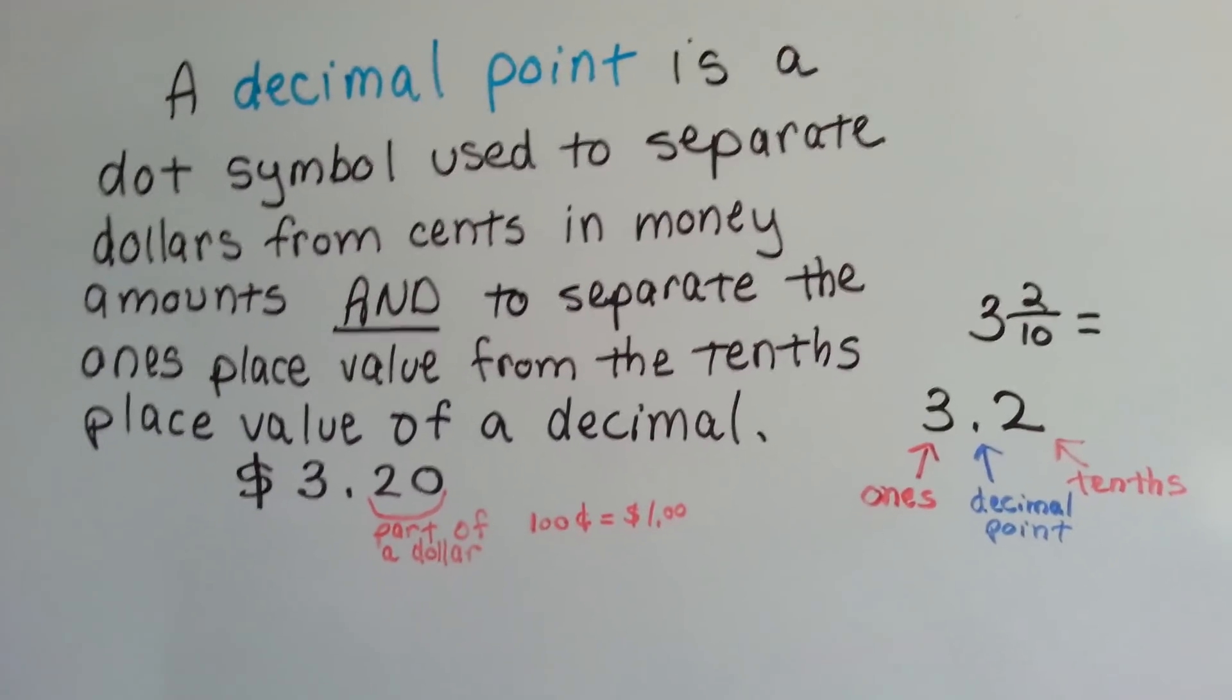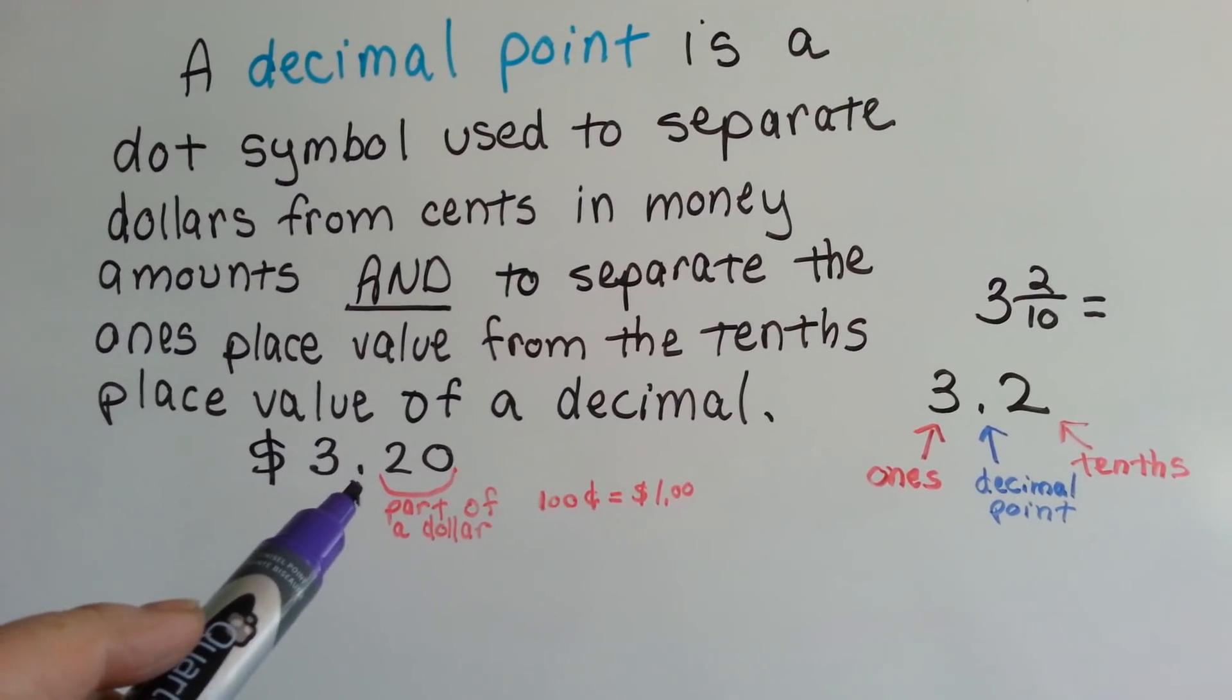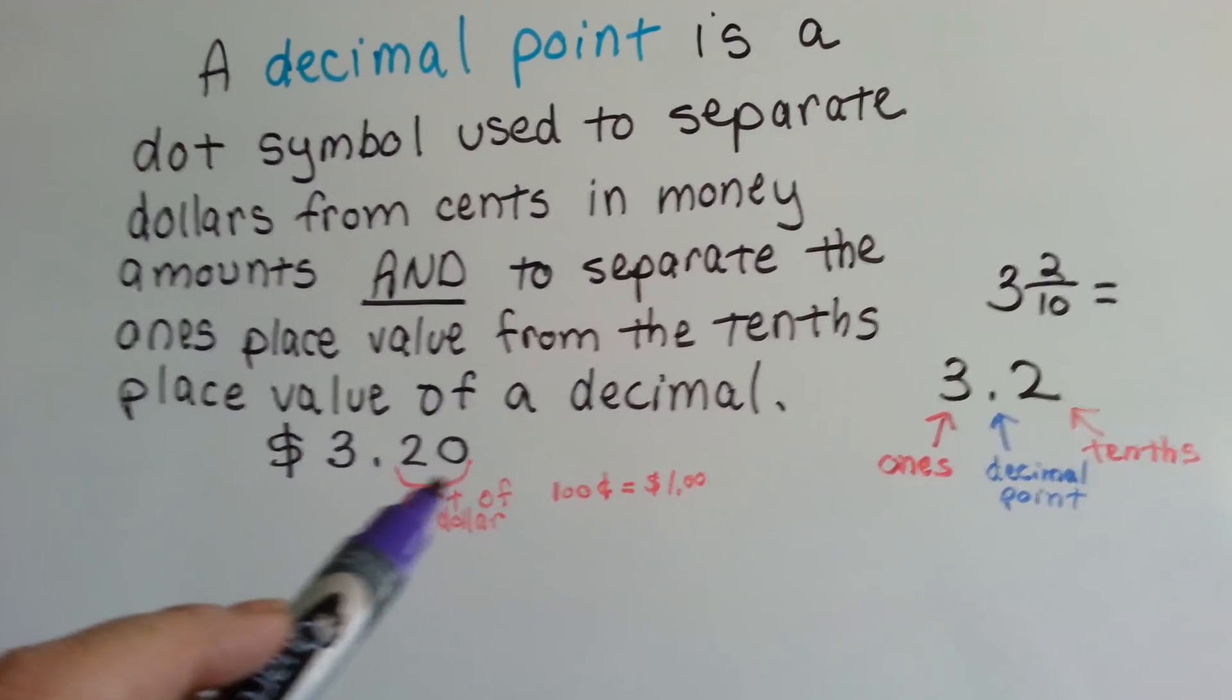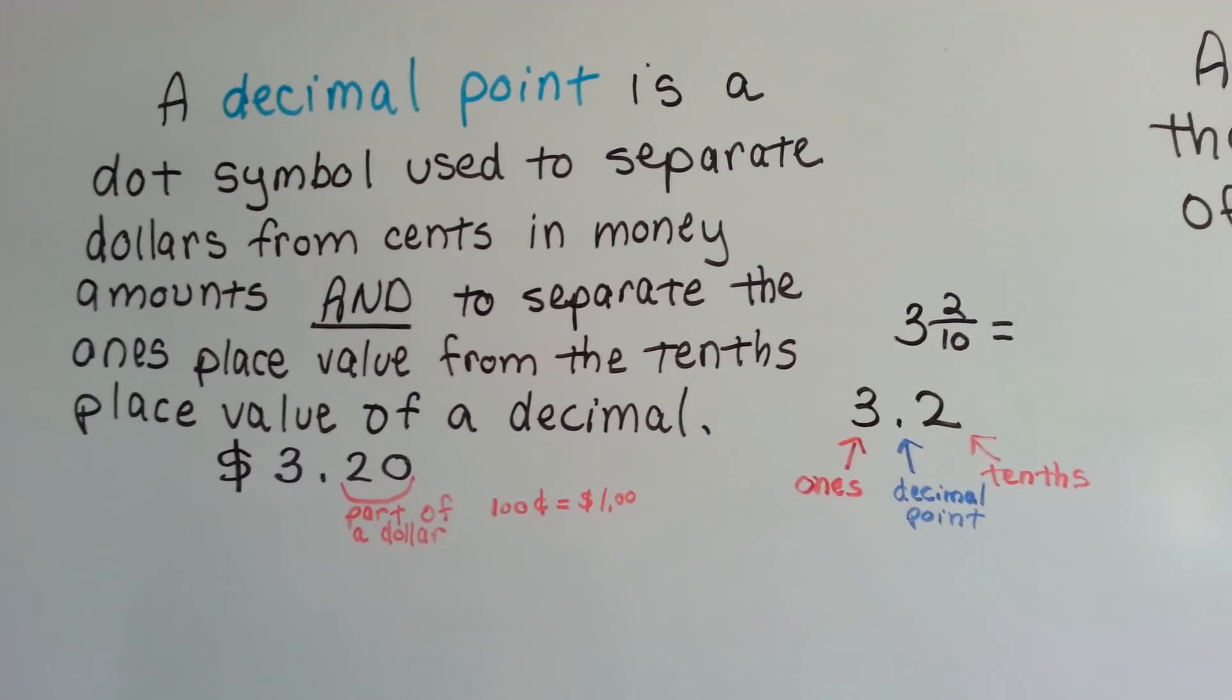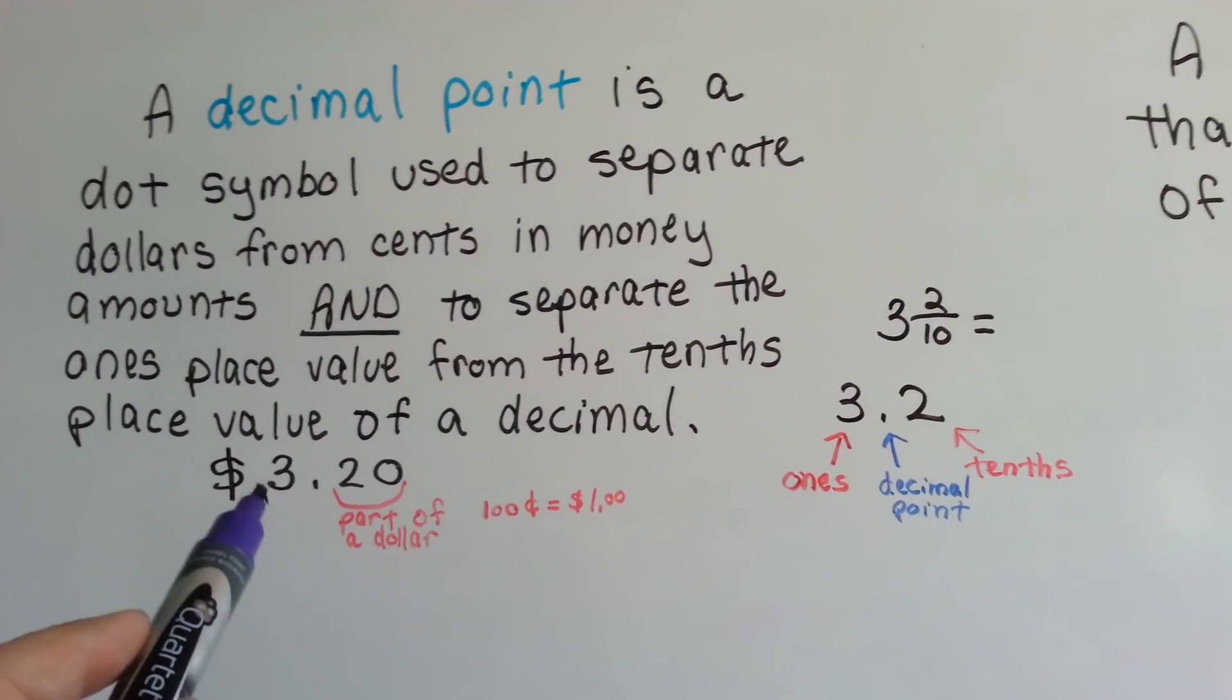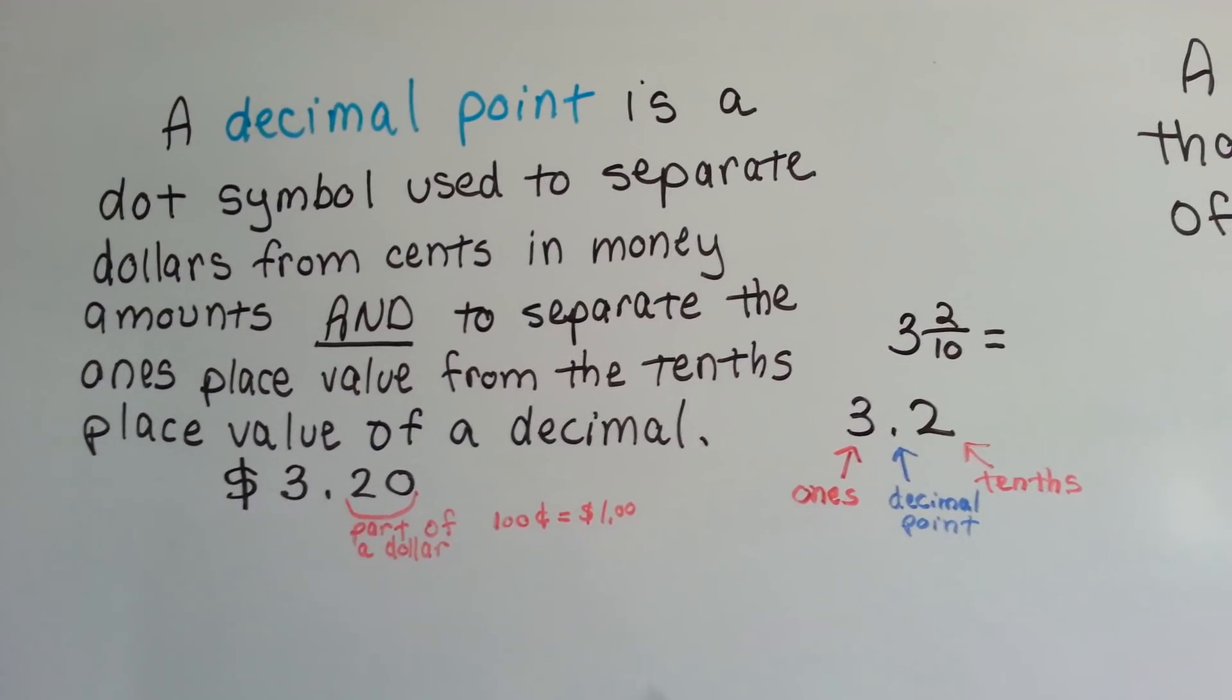So, like for money, here is the decimal point, and this 20 equals 20 cents of 100 cents of a dollar. It's part of a dollar. This is the whole dollar, the ones place, tenths and hundredths.